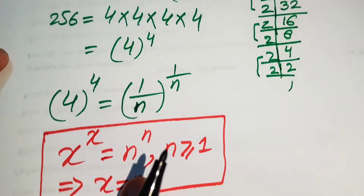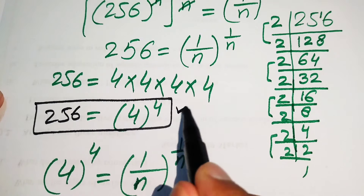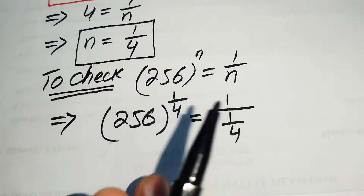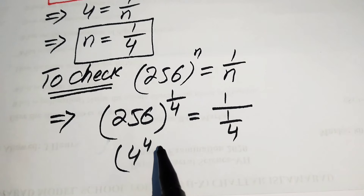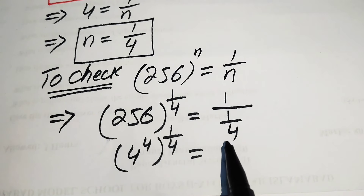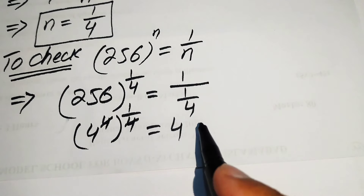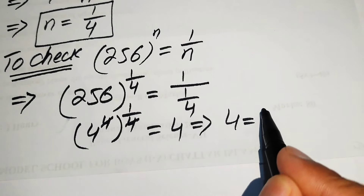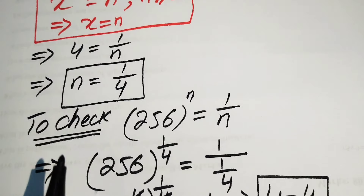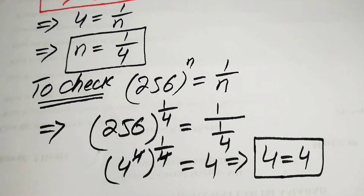We know that 256 equals 4 to the power of 4, so we have 4 to the power of 4, raised to the power of 1 over 4. The exponent 4 is cancelled out by the exponent 1 over 4, giving us 4. On the right-hand side, the reciprocal of 1 over 4 is 4. So 4 equals 4, which confirms that n equals 1 over 4 is indeed the final solution.